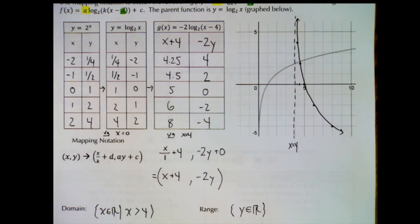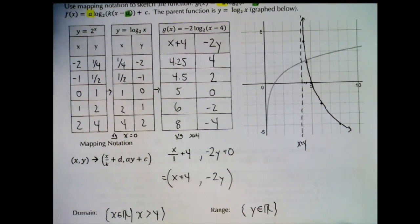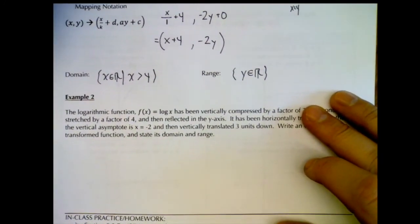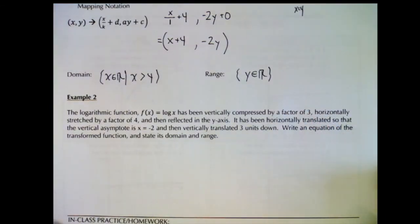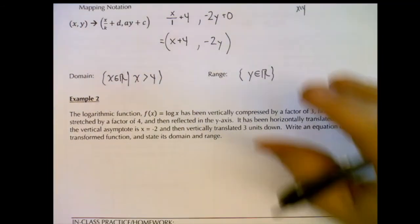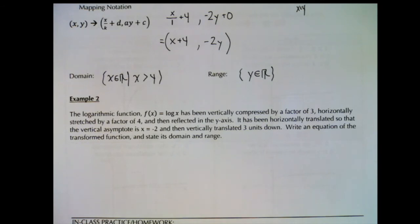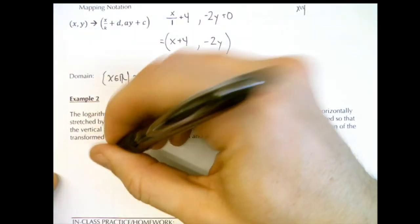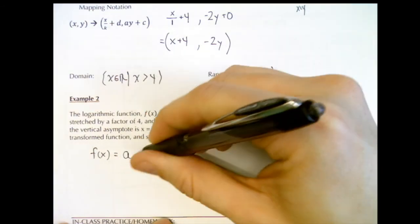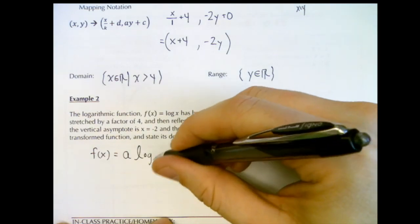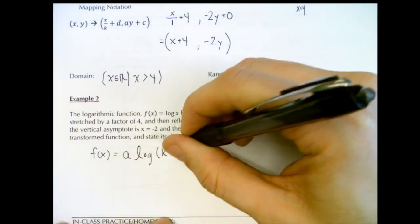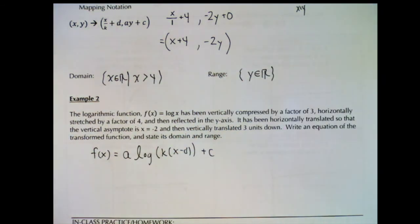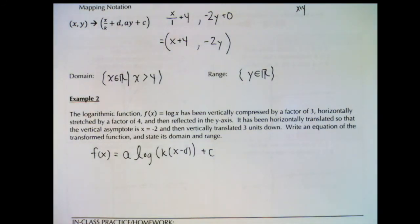The last thing to cover is writing the equation of a transformed logarithmic function from a description. You can pause the video and try it yourself, then check solutions on the website, or continue watching. Remember: f(x) can have four transformations — a goes in front of the log, the base is stated in the description, inside the log you can have k and d, and outside you add c.